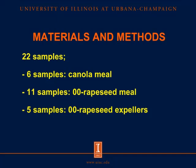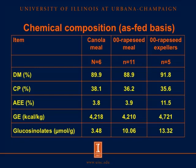For materials and methods, we had 22 samples of canola and rapeseed meal: 6 samples were canola meal, 11 samples were double-zero rapeseed meal, and 5 samples were double-zero rapeseed expellers. As shown in this table, dry matter ranged from 88.9 in double-zero rapeseed meal to 91.8 in double-zero rapeseed expellers. Crude protein ranged from 35.6 in double-zero rapeseed expellers to 38.1 in canola meal. Fat by acid hydrolyzed ether extract ranged from 3.8% in canola meal to 11.5% in double-zero rapeseed expellers. Gross energy ranged from 4,200 in double-zero rapeseed meal to 4,700 in double-zero rapeseed expellers. Glucosinolate ranged from 3.48 in canola meal to 13.32 in double-zero rapeseed expellers.